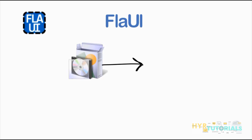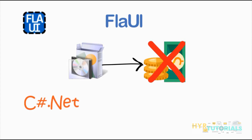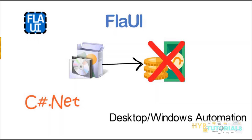The next one is FlaUI. FlaUI is also a .NET library. You can download these libraries via Visual Studio NuGet Package Manager — both FlaUI and White libraries are available in NuGet Package Manager. This is also an open source library; it is not licensed, so you can download and use it free of cost. It uses C#.NET for writing test scripts and supports only Windows application automation. It does not support web or mobile application automation.